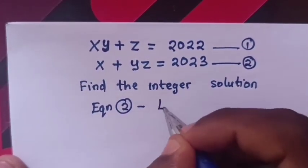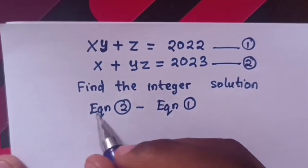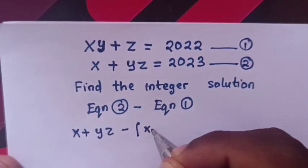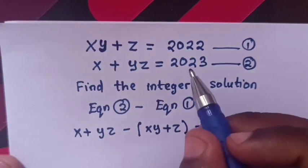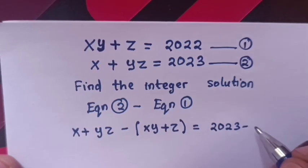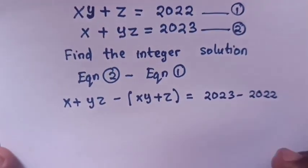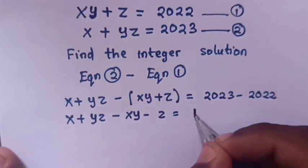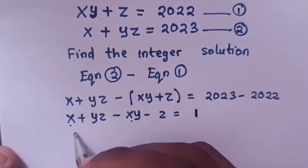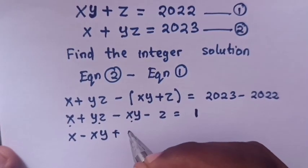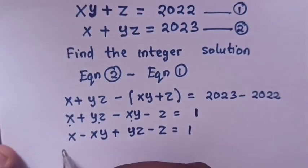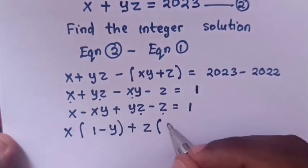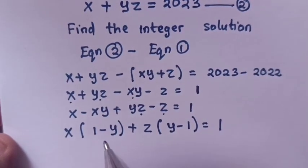We take equation 2 minus equation 1. Equation 2 is x + yz, minus equation 1 which is xy + z, equals 2023 minus 2022. Expanding: x + yz - xy - z = 1. Rearranging: x - xy + yz - z = 1. Factoring: x(1 - y) + z(y - 1) = 1.